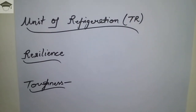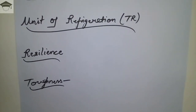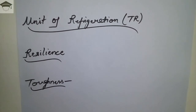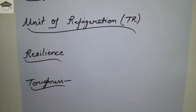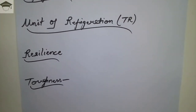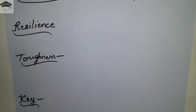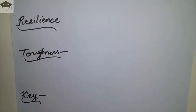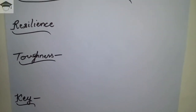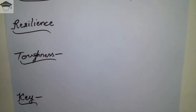Resilience: the amount of energy absorbed or stored in a body up to its elastic point is known as resilience. Toughness: the amount of energy stored by a body up to its fracture point is known as toughness.